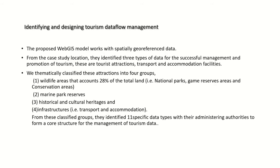The third methodology is identifying and designing tourism data flow management. The proposed web GIS model works with spatially georeferenced data. From Tanzania, three types of data were identified: tourist attractions, transport, and accommodation facilities. Attractions were thematically classified into four groups: wildlife areas (accounting for 28% of total land, including national parks, game reserves, reserve areas, and conservation areas), marine park reserves, historical and cultural heritage, and infrastructures including transport and accommodation.